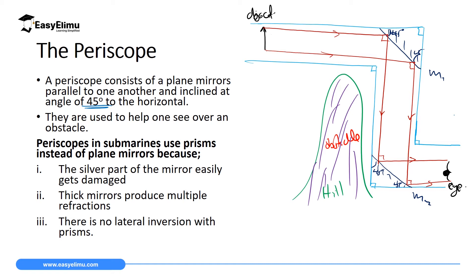Now the rays from the object have reached the eye of this person. The person will see as if the image is coming from behind the second mirror. When drawing this, the object and the image must be in the same line. The person sees the image as if it is the same distance behind the obstacle as the object is in front of it.